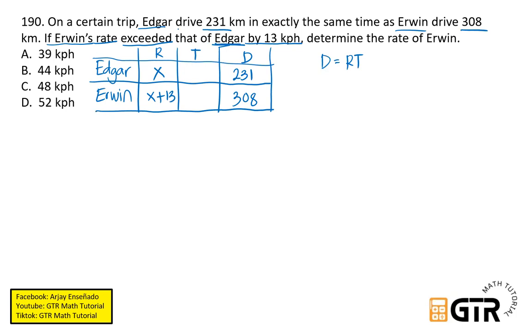And then, ang sabi sa problem, Edgar drove 231 kilometers in exactly, exactly the same time. So yan yung pinaka-keyword natin dito. Dito natin magubuo yung equation natin, exactly the same time. So ibig sabihin, ang time natin, time ni Edgar at ni Erwin ay i-equate natin. Kasi gawa nga dito sa exactly the same time. So, solve natin ang formula para sa T. Divide lang natin ito, both sides by R. So ang formula for time ay distance over rate. So dito sa given natin na distance at yung rate, so masasolve natin yung time.